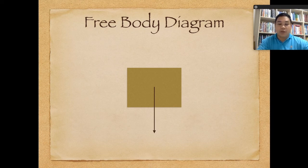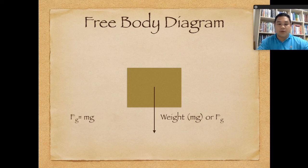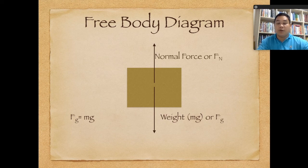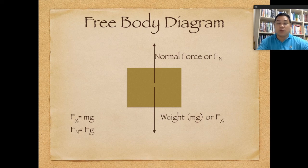Let's discuss the free body diagram. We have a box, and as we learned before, we draw an arrow going down representing the force of gravity, or weight, equated as mg — so weight equals mass times gravity. We also have an upward arrow representing the normal force, Fn. Since there is no vertical movement, Fn equals Fg, so normal force equals weight.